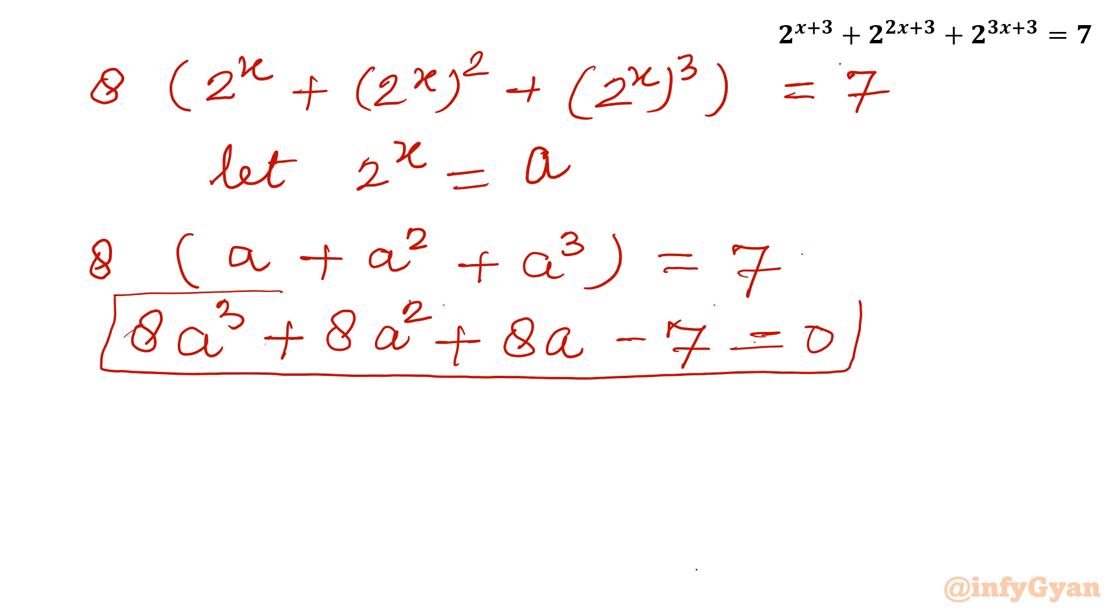This is one cubic equation and now we will use rational root theorem. So I will write the eligible factors of constant term, it is -7, so I can write ±1 and it is prime number, so only two factors we can write ±7. Now here the leading coefficient is 8, so I can write ±1, ±2, ±4, and ±8. Now our eligible solution list, that would be the ratio of constant to leading coefficient.